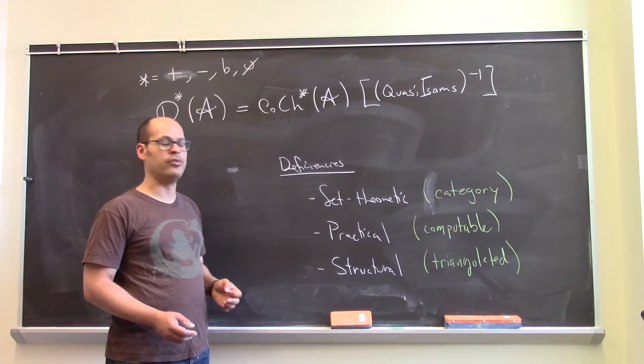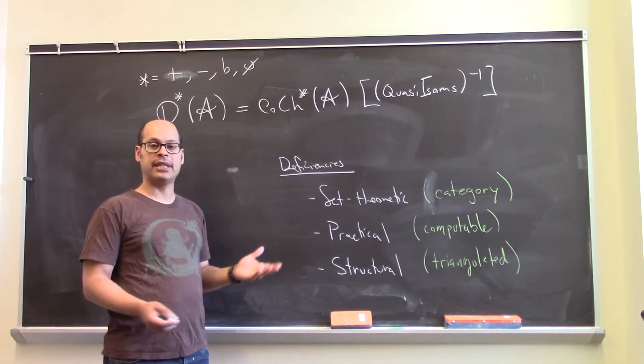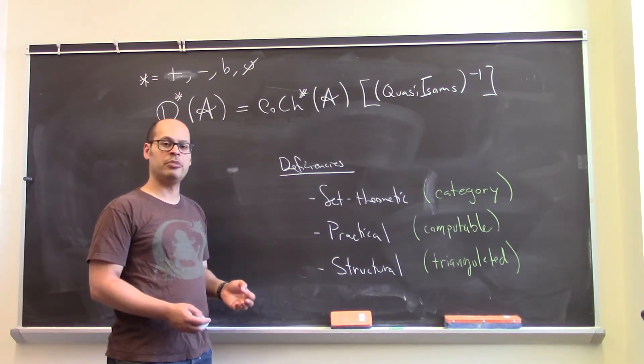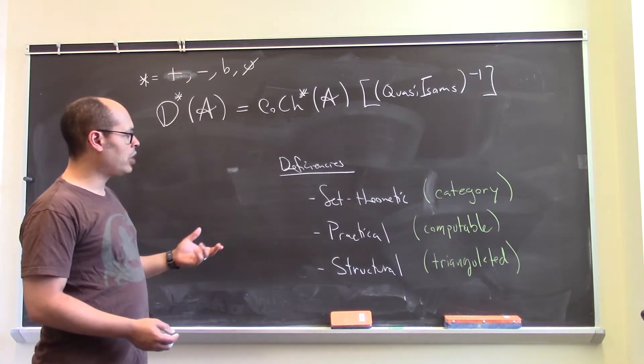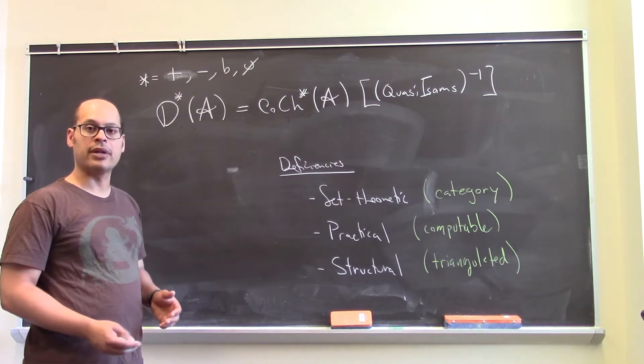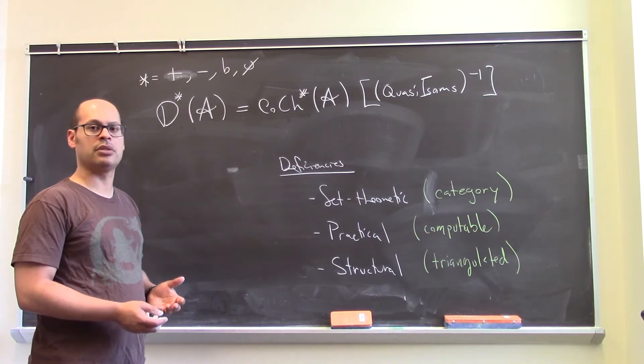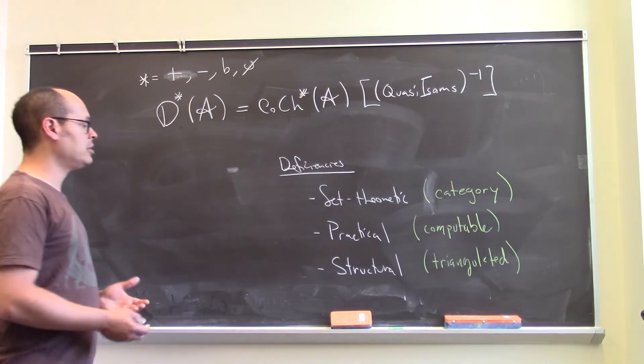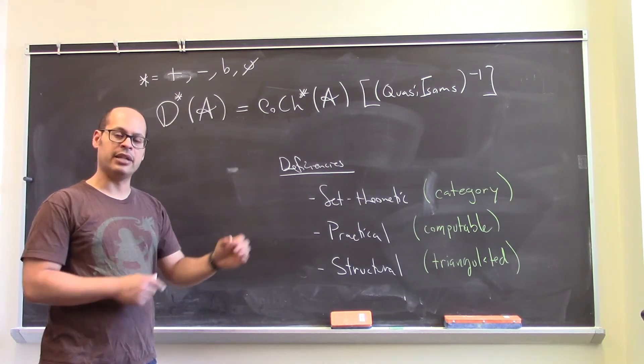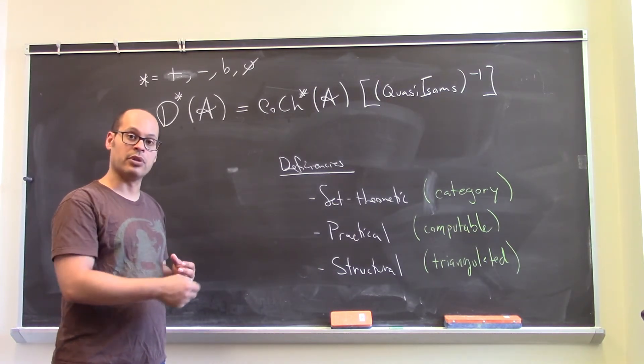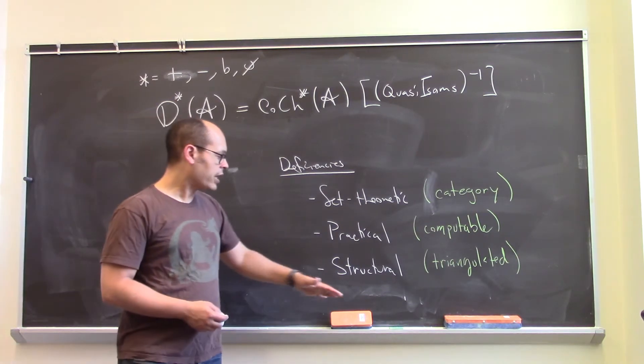Here are some problems with this. First off, there is the set theoretic problem of, is this even a category? For example, if you don't like the fact that your Hom sets aren't actually sets, that they're maybe Hom classes or something like that, maybe that bothers you. There are practical issues. Is this really computable? I haven't said how to make this look like a generalized category, but although these things always exist, the description of morphisms in these categories is awkward, shall we say. And how to compose morphisms is, again, an awkward process. You have to concatenate these strings of morphisms going forward and backwards. The description gets more and more complicated the more things you compose. Finally, there are structural issues. That is to say, this derived category is actually not just an abstract category. It has extra structure that we would like to actually use. In particular, it's a triangulated category.